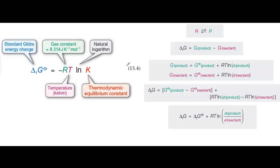Equation 15.4 is one of the fundamental equations of thermodynamics. It links the equilibrium constant K to the standard Gibbs energy change delta G. Notice that it's the thermodynamic equilibrium constant we're talking about and the standard Gibbs energy change in this equation. Let's pick out a couple of key features of the equation.